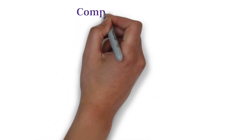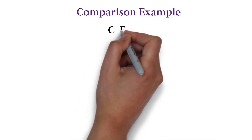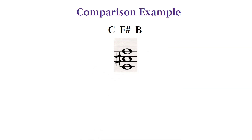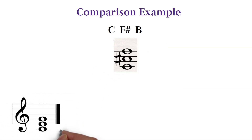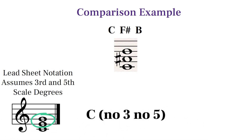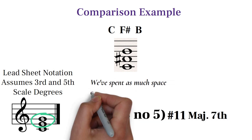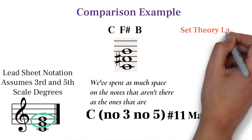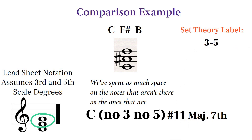Let's consider how problematic this system is for labeling a simple three-note chord with the pitches C, F sharp, and B. Lead sheet notation presupposes that we have a third and fifth in our chord, so first we'll have to label no third, no fifth, then label the F sharp as an extension sharp 11, and the B as a major 7. This label is cumbersome and counterintuitive, especially when you compare it to the simple label we'd use for this chord in set theory: 3-5.